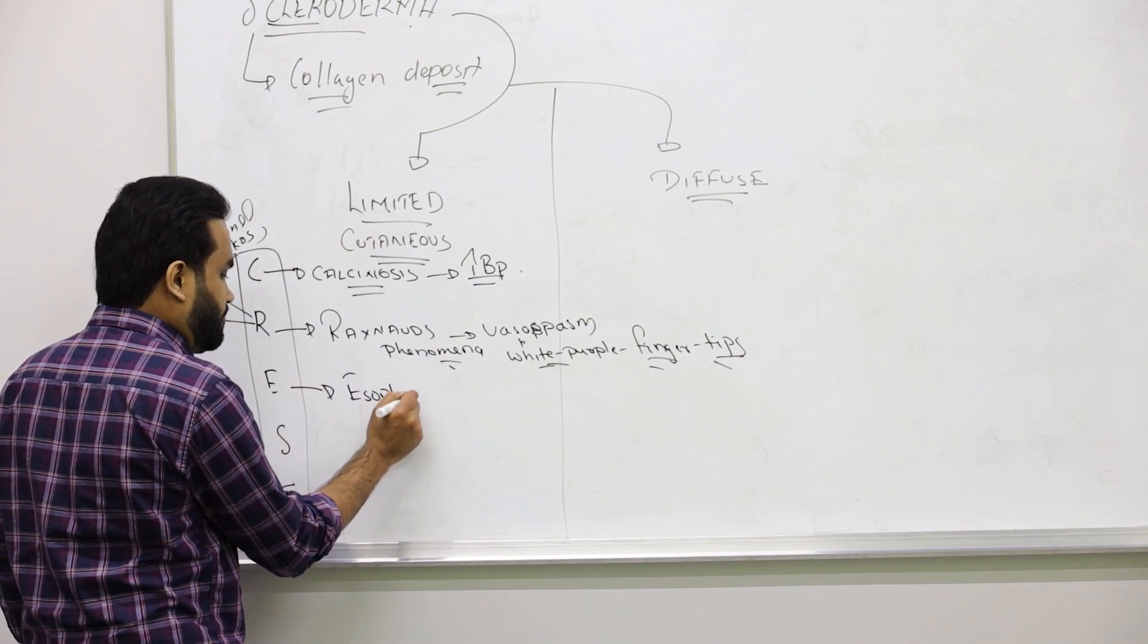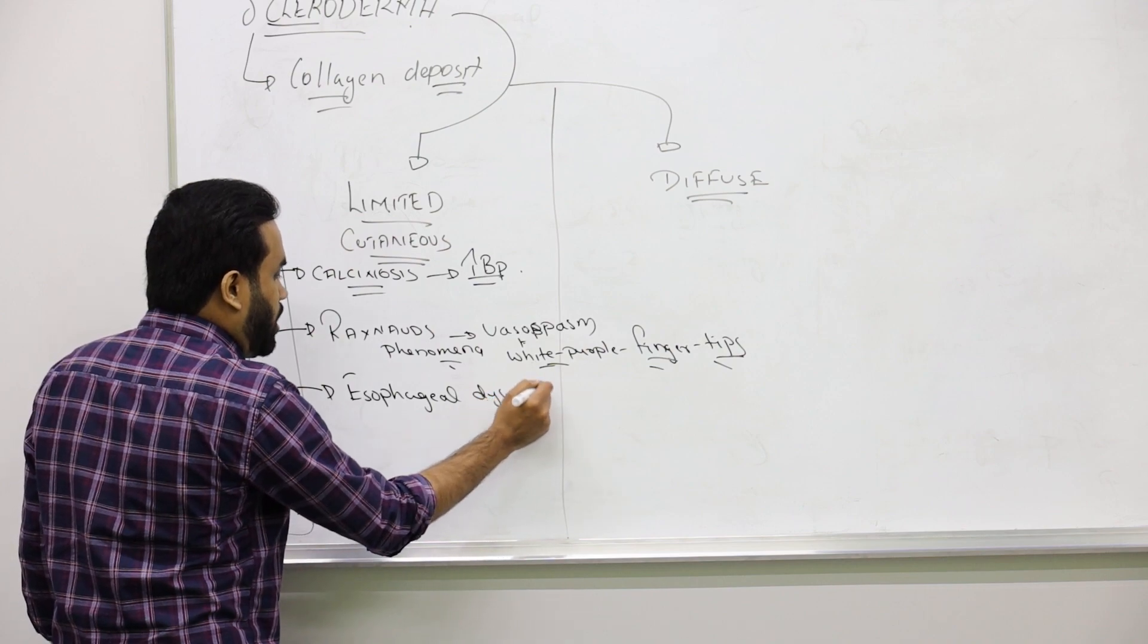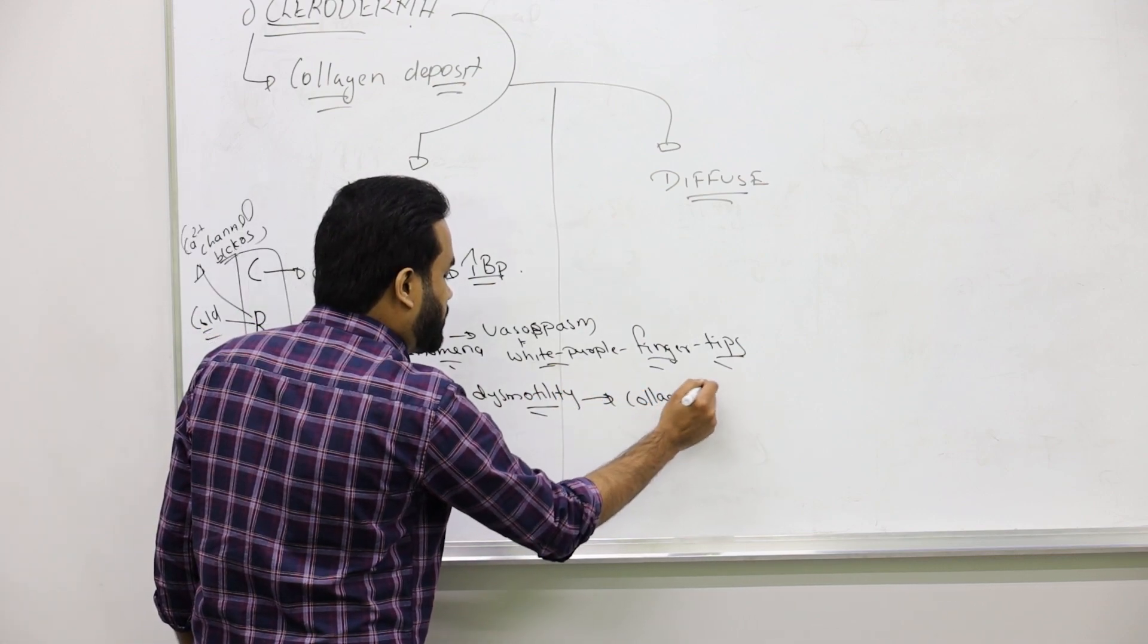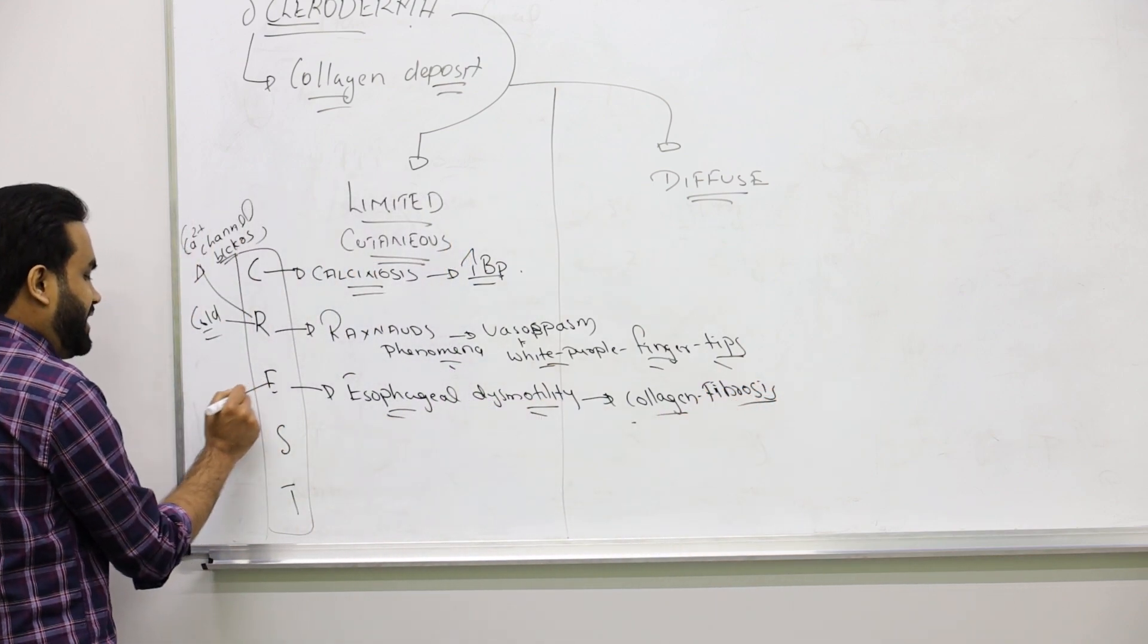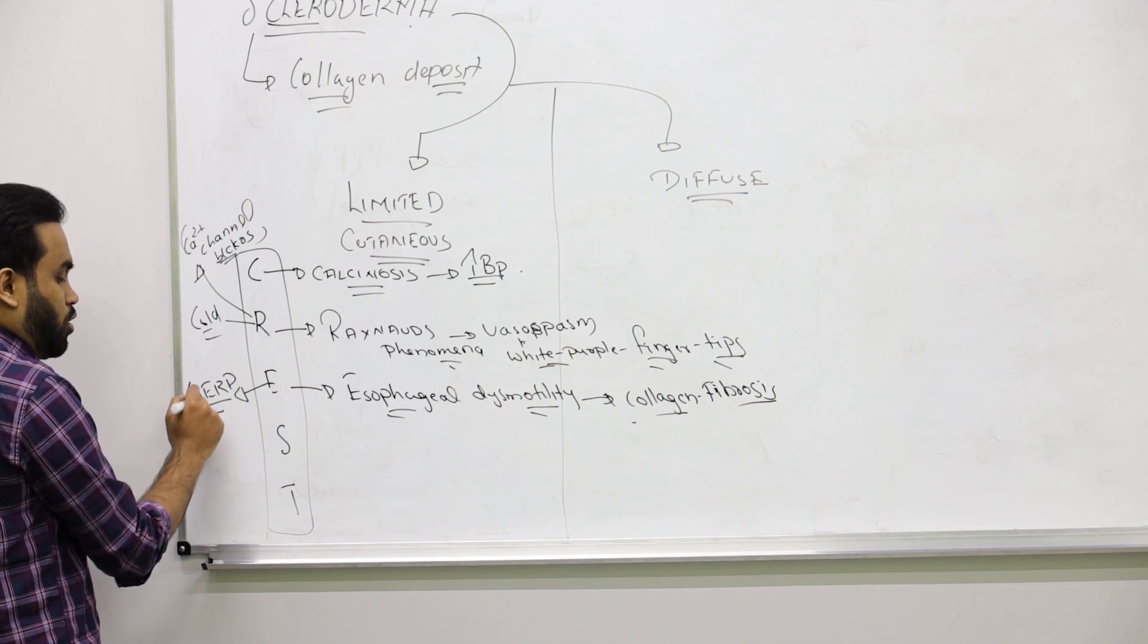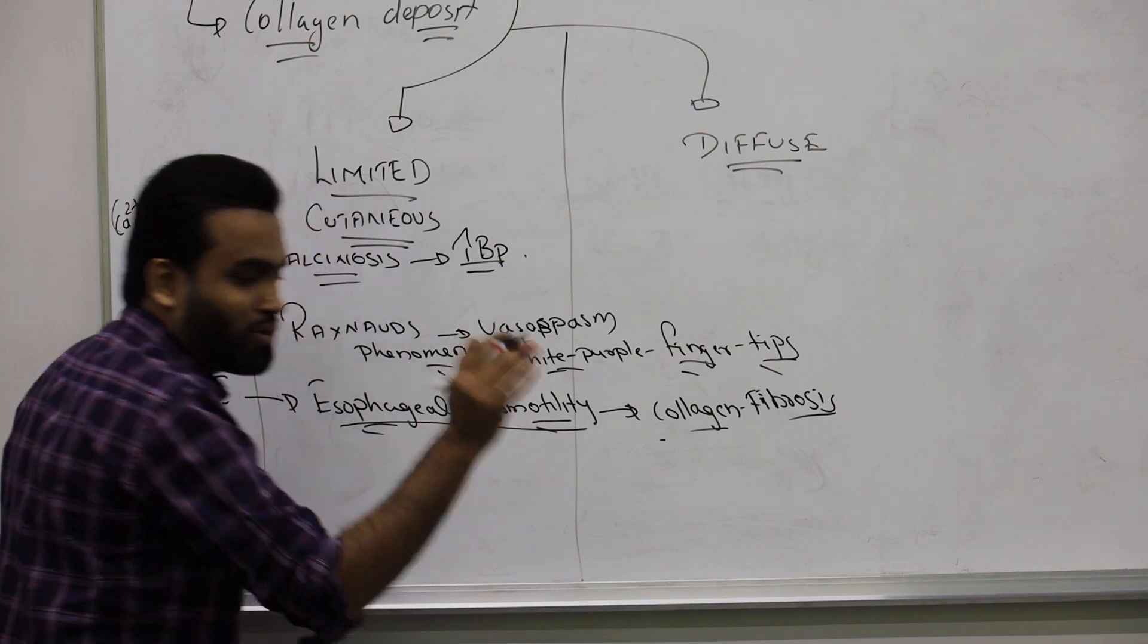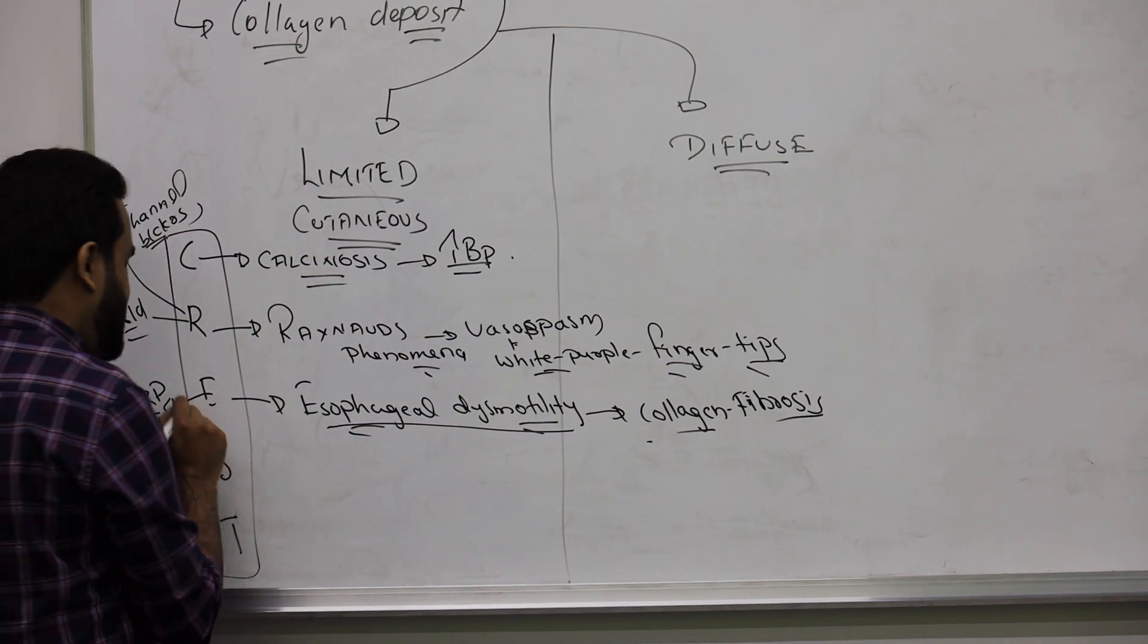E is for esophageal dysmotility. The esophagus is not moving because the esophagus is covered and deposited with collagen. They will have fibrosis, collagen fibrosis happening here, so the lower esophageal sphincter will be weakened. That can lead to GERD, so always associate gastroesophageal reflux disease with scleroderma.